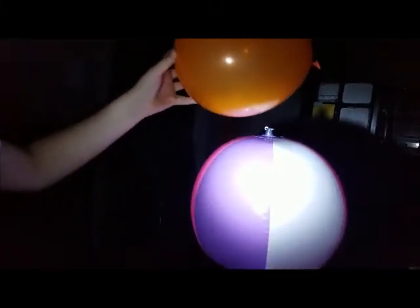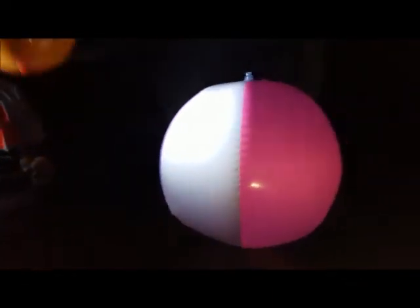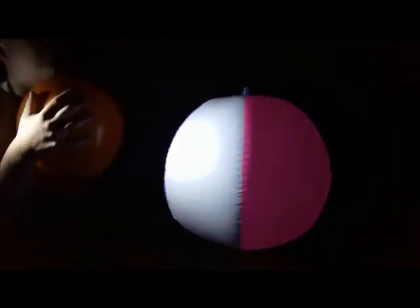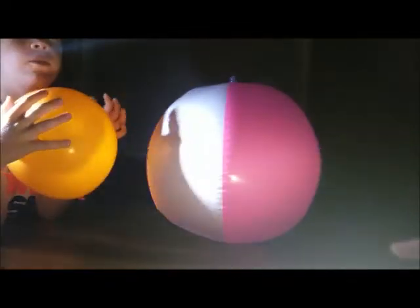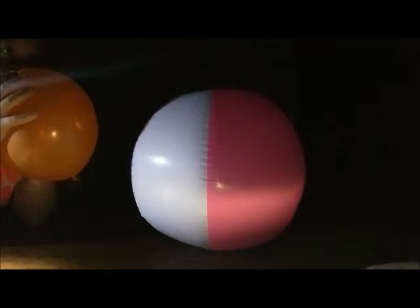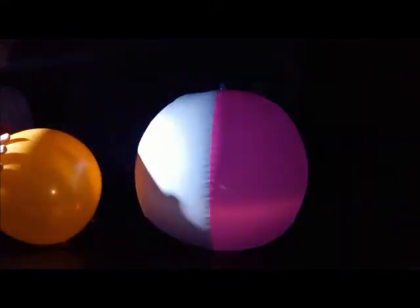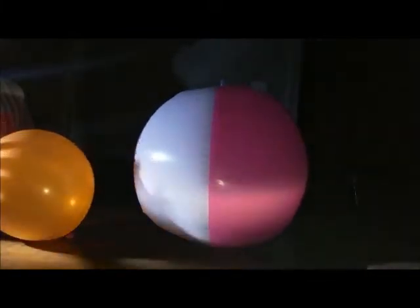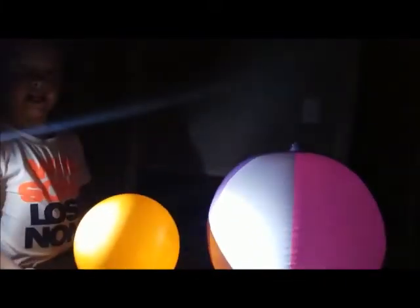All right, so in this activity the flashlight represents the Sun, the large ball represents the Earth, and the small ball represents the Moon. The first thing you did was simulate the Moon blocking the Sun's light. This is called a solar eclipse. Oh yeah, solar eclipse. So how cool was that? That's a really cool experiment.